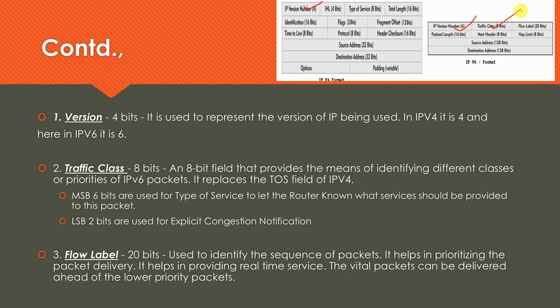The second field is Traffic Class, which carries 8 bits. These 8 bits are divided into two parts: the MSB with 6 bits, and the LSB with 2 bits. The MSB 6 bits are used for Type of Service — to let the router know what services should be provided to the packet. The LSB 2 bits are used to indicate explicit congestion notification. This field replaces the Type of Service field from IPv4, which was also 8 bits.